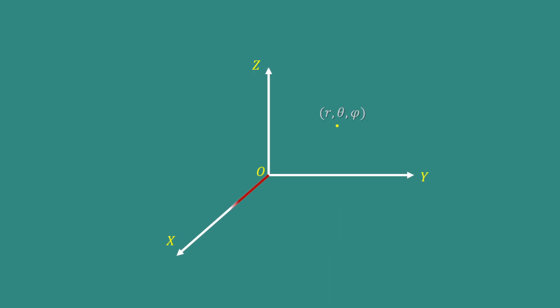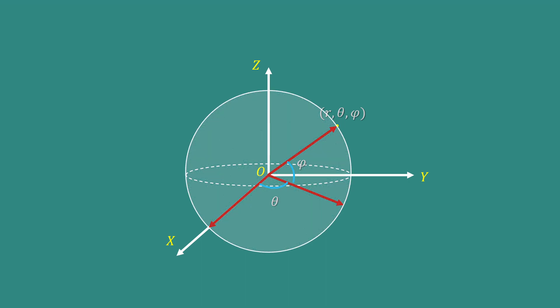Now, in spherical coordinate system R, theta, phi, we have to move along X-axis, then turn through an angle theta and then turn through an angle phi. Then we will get the exact location of this point in terms of R, theta and phi, that is in spherical coordinate system.